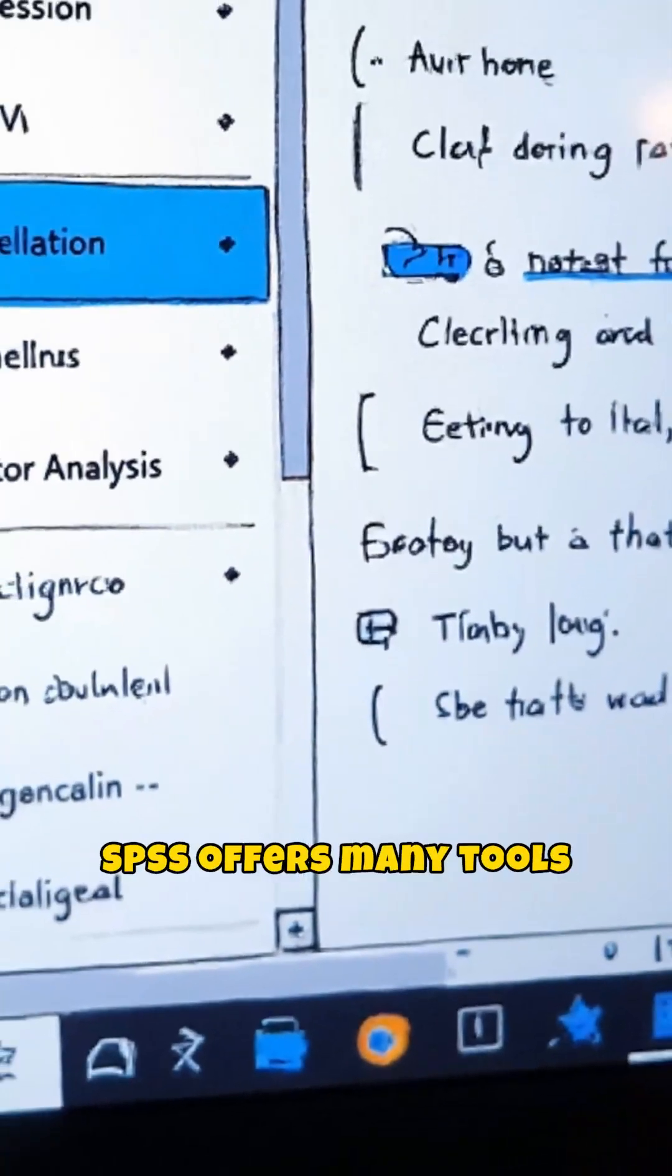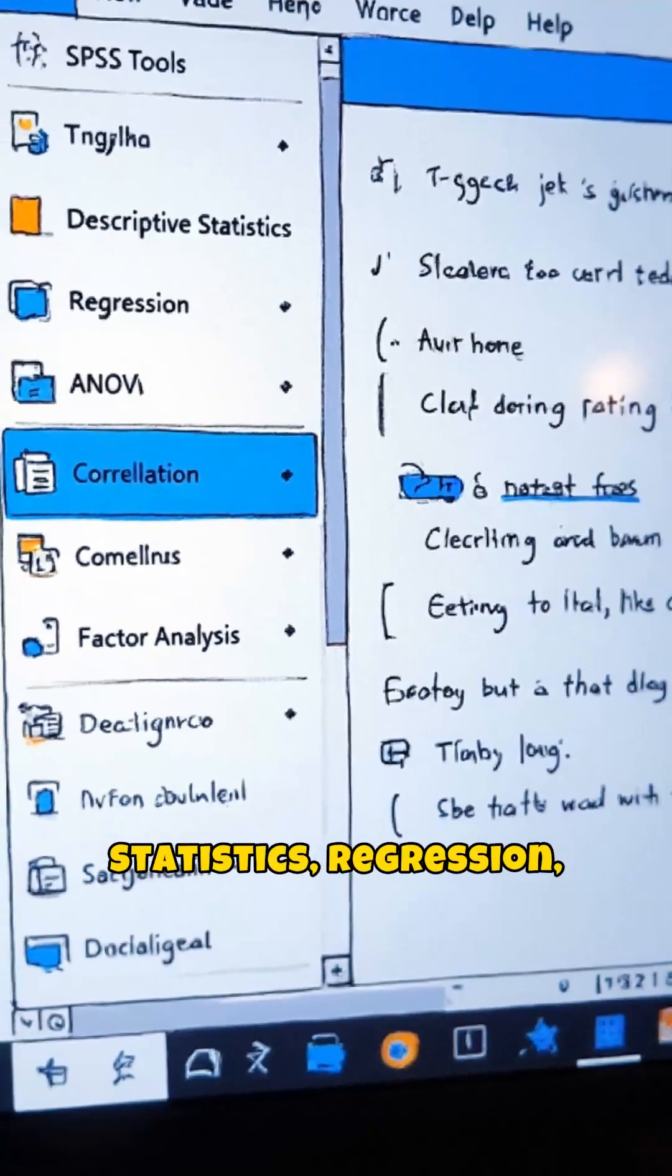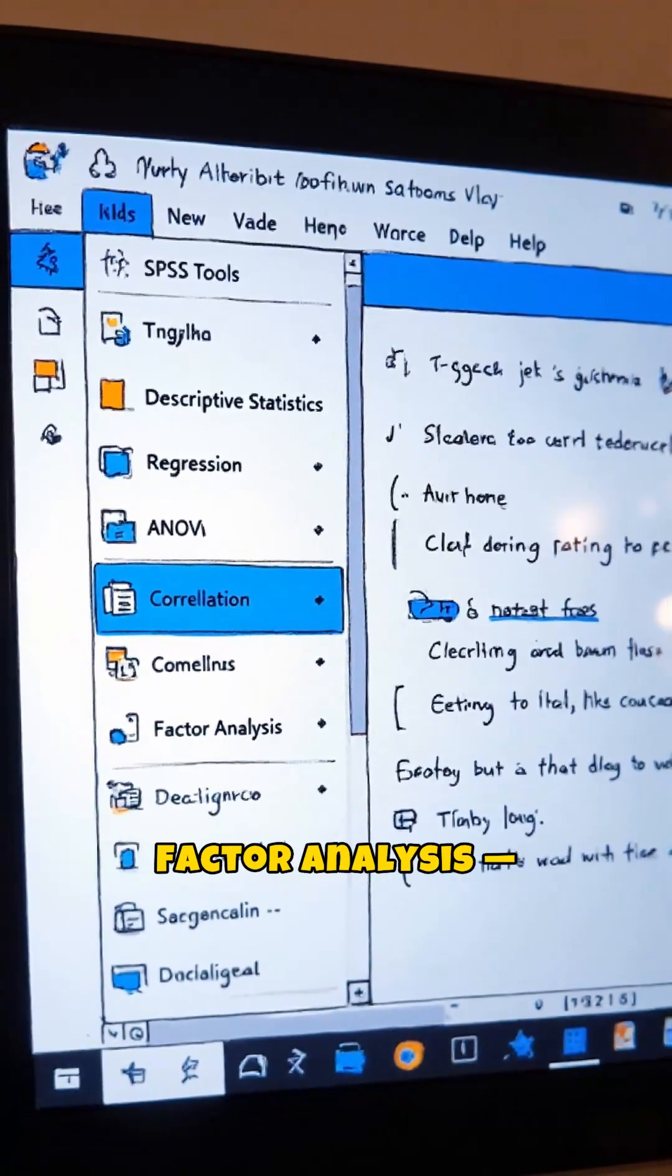SPSS offers many tools like descriptive statistics, regression, ANOVA, correlation, and factor analysis, essential for deep research analysis.